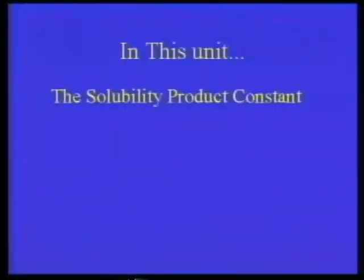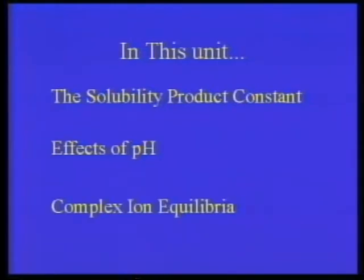Welcome again to Freshman College Chemistry, Part 2. We were just getting into an interesting study of how you can use your knowledge of solubility products and things of that type to separate ions in a qualitative analysis scheme. In this unit, we've talked about the solubility product constant extensively, and we will deal with effects of pH a little later, showing how to control quantities of reagents by controlling pH. We'll also talk about complex ion equilibria.